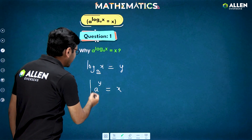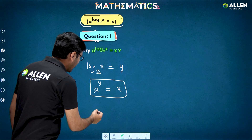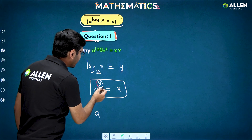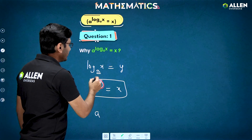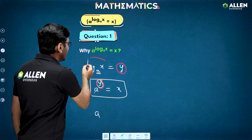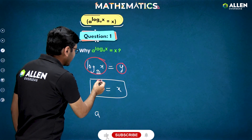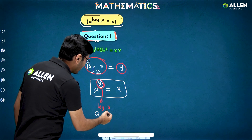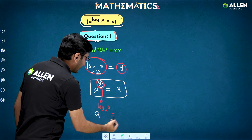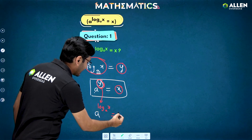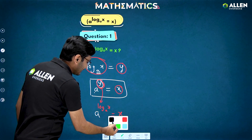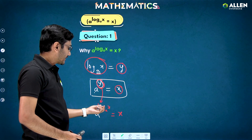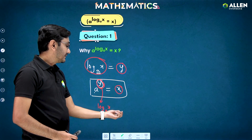Now, in this equation, what do we do? In place of a, I'll write a, but in place of y, I'll put y equal to log of x to the base a. So in place of this y, I'll put log of x to the base a, and what I'm getting? I'm getting x. So have we proved it? Yes, definitely we got what we wanted: a to the power log of x to the base a, we just get x.